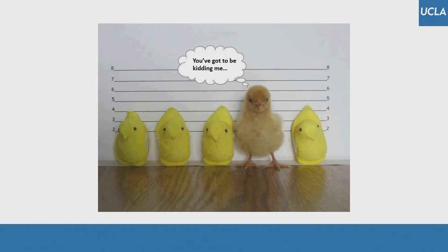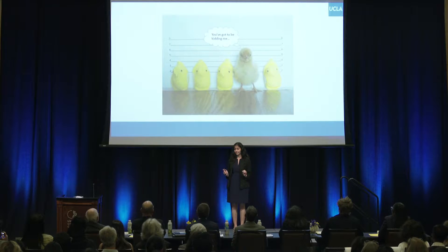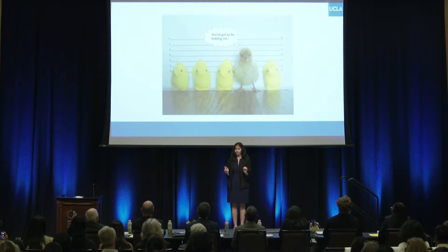Research shows that nearly 70% of wrongful convictions happen because of eyewitness misidentification. A key factor in misidentification is that eyewitnesses are often guided by their first impressions of the suspects in a lineup.